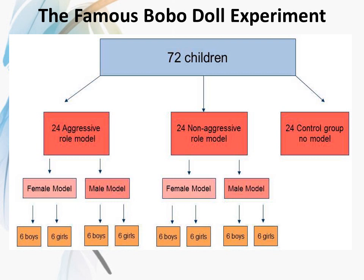In the Bobo Doll experiment, Bandura divided the participants into three separate groups: 24 students in an aggressive role model group, 24 in a non-aggressive role model group, and 24 in a control group with no model. The three groups were then divided by gender into six subgroups, with a female model and a male model in each of the first two groups, further divided into six boys and six girls.